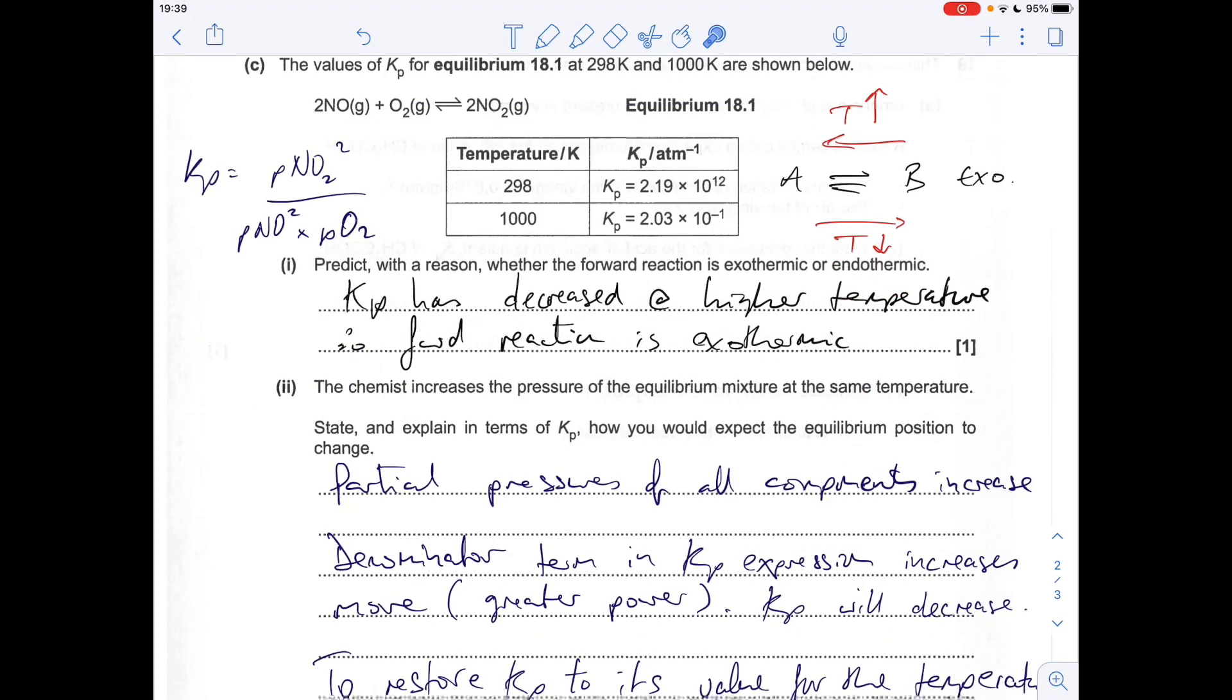We're moving on to the trickiest thing to explain. We've got to state and explain in terms of Kp, so we can't give a Le Chatelier's principle answer where we'd just say increasing pressure favors the side with the fewest moles. That's dead easy, can't do it that way.